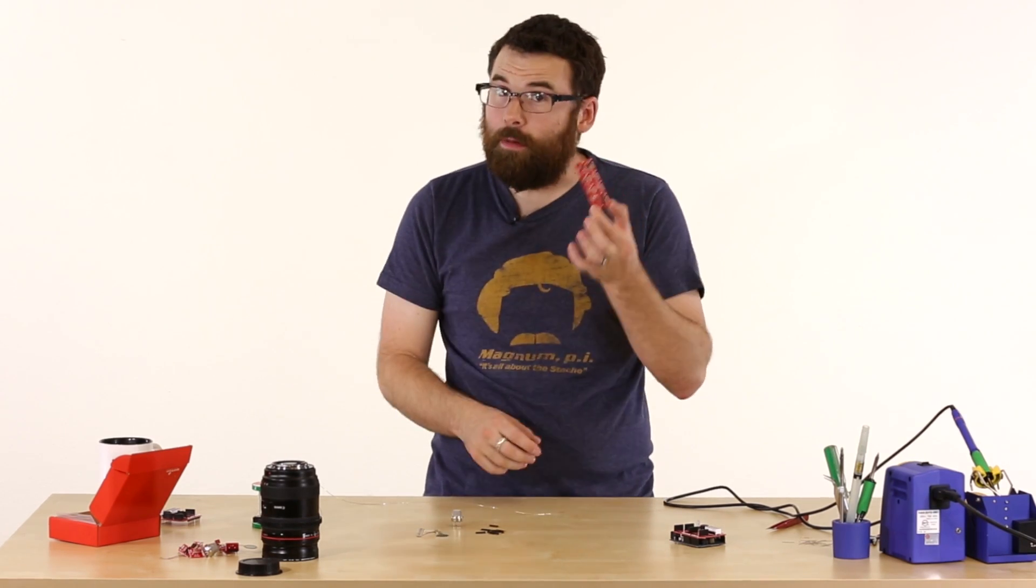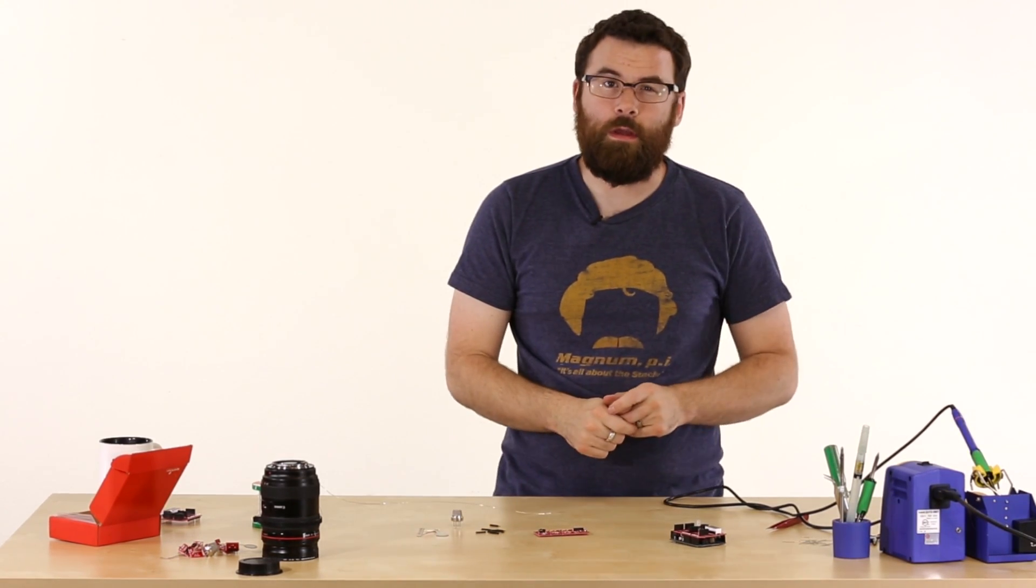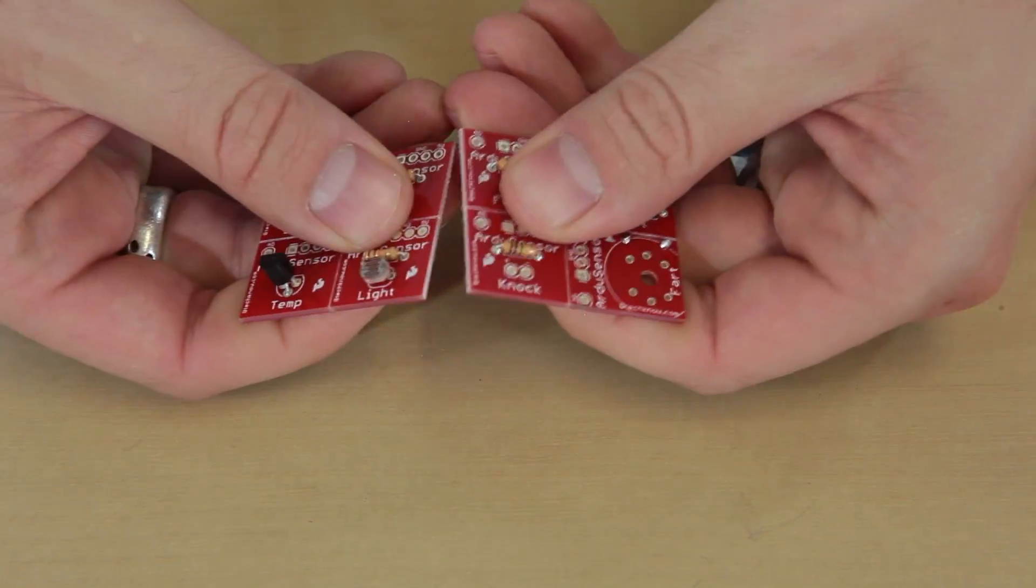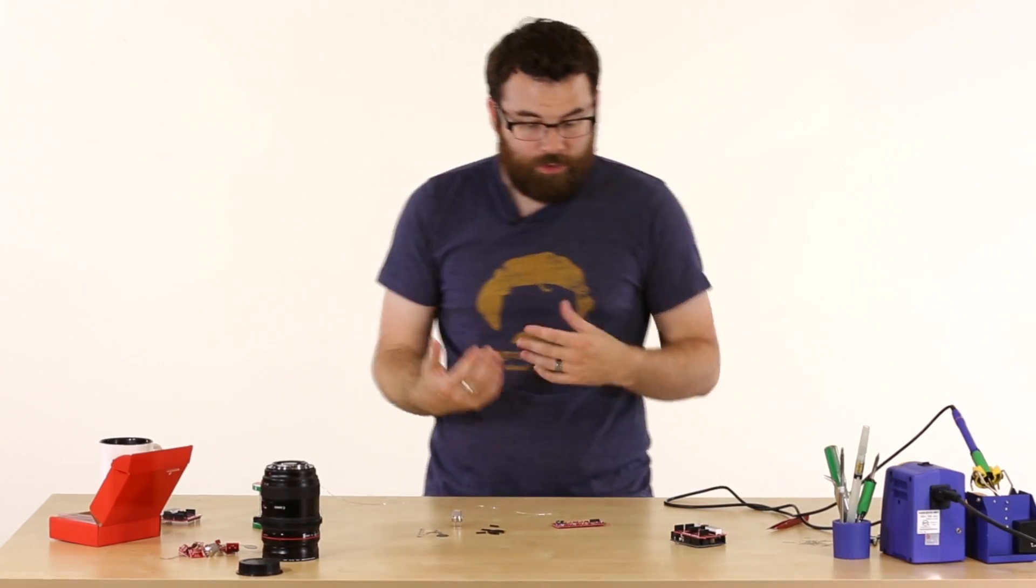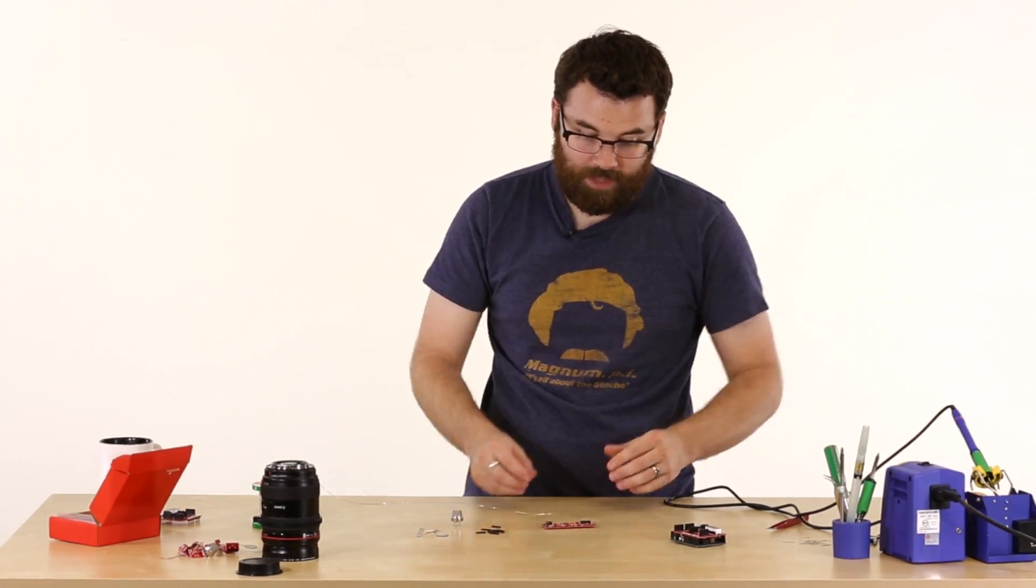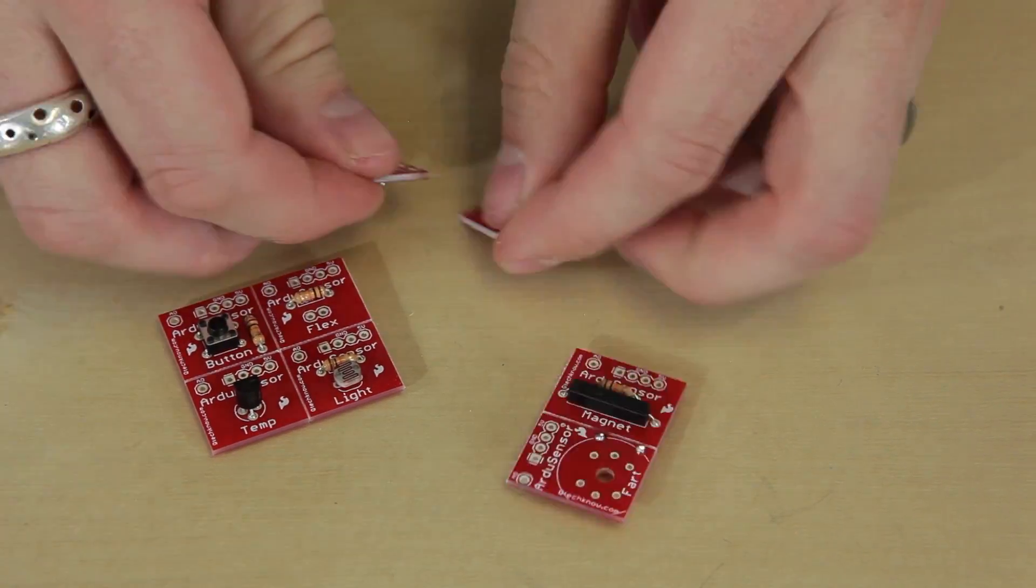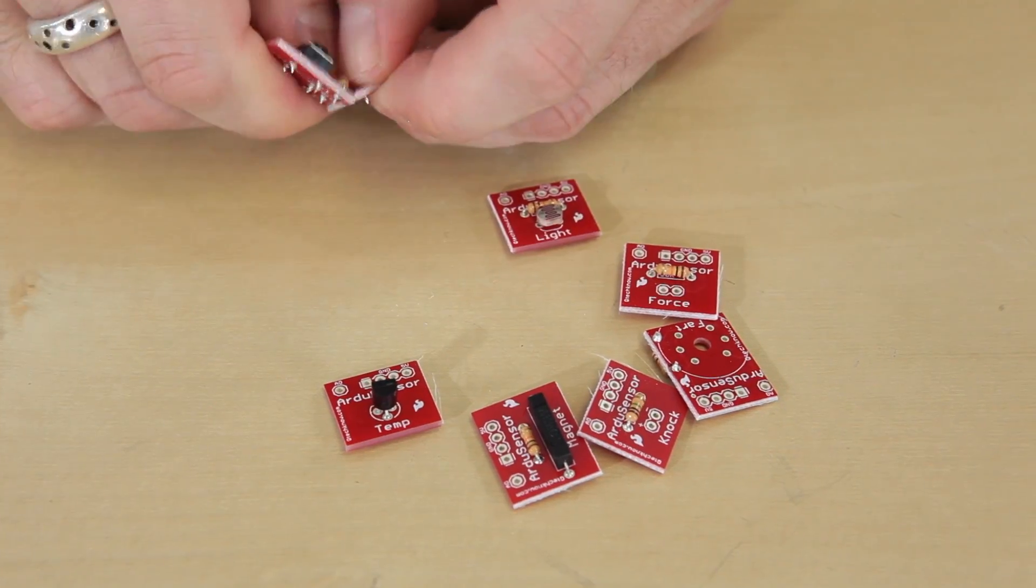Now that we have most of the components soldered to the sensor board, there are a lot of different ways we can go. All these boards snap apart and they will be little individual modules that will plug into the shield. At this point you can snap them apart or continue to individually put the components on them. I'm actually going to snap them apart as individual modules and then use the board as kind of a jig to hold them in place.